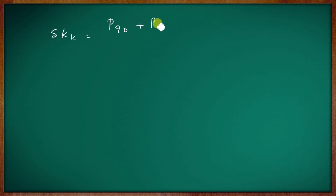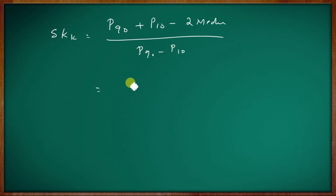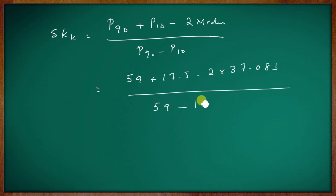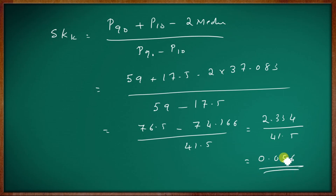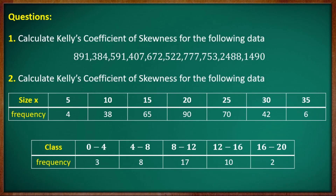Kelly's coefficient of skewness equals (P90 plus P10 minus 2 times median) divided by (P90 minus P10). P90 is 59, P10 is 17.5, and median is 37.083. This equals (59 plus 17.5 minus 2 times 37.083) divided by (59 minus 17.5), equals 76.5 minus 74.166 divided by 41.5, giving approximately 2.334 divided by 41.5. The result is discussed in the next video.